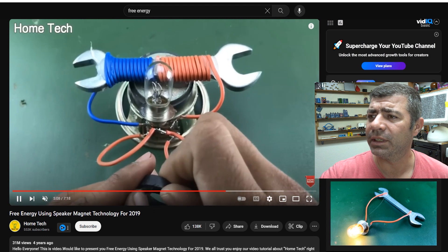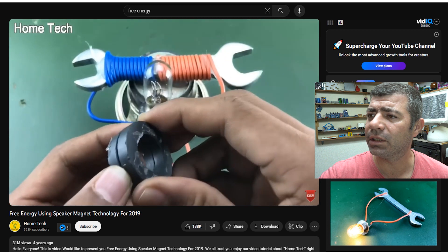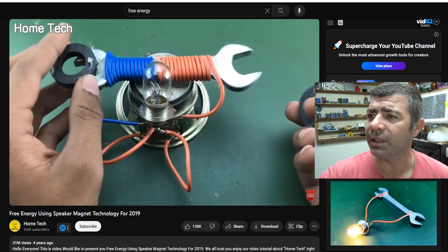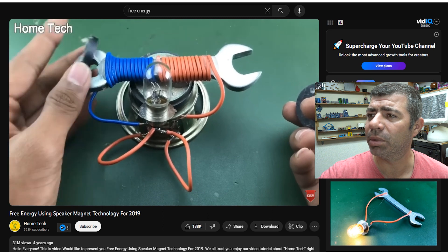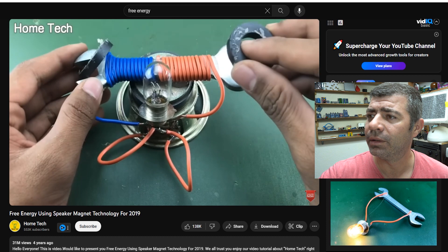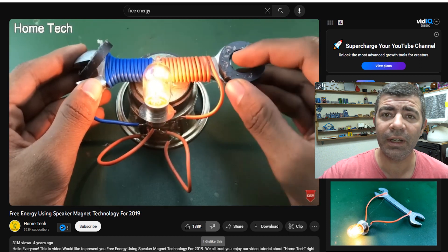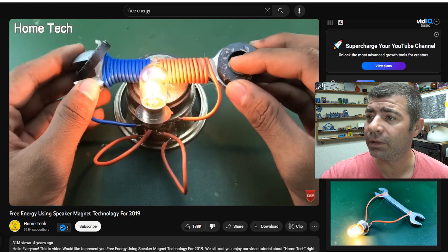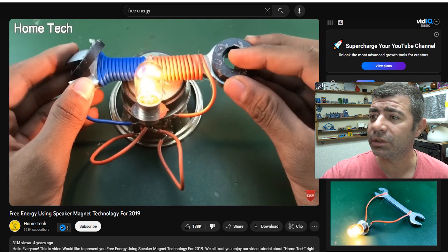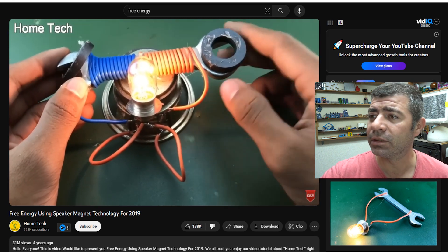He places a light bulb and now he's using two magnets that he'll place on the wrench. Let's see if the light bulb will turn on. What? The free energy device is working and this guy has 31 million views, 138,000 likes. Come on people.